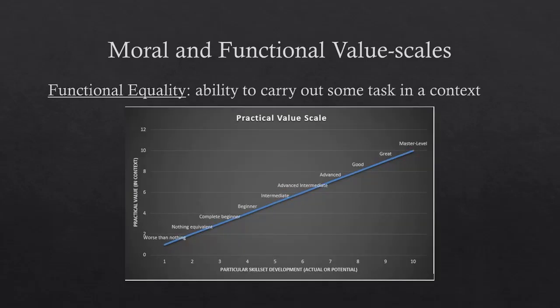The other side of that coin is functional equality. When we speak of functional equality, we are speaking strictly of the ability to carry out some task in a given context. While moral equality locks you into your spot by the nature of what you are — so if you are human, you are better than a mosquito — functional equality ignores any such distinctions. If there is a field that needs to be tilled without modern technology, any ten humans are worse than one decent ox — the ox is functionally better at that particular task.